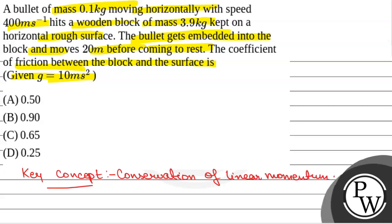Now we will see we have a bullet which has a mass 0.1 kg. This is a bullet of mass 0.1 kg and it is moving with a speed of 400 meter per second. Now it hits a wooden block which had a mass 3.9 kg.